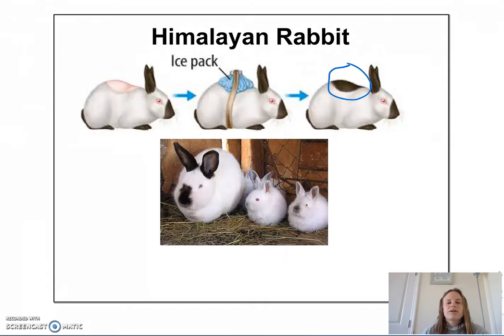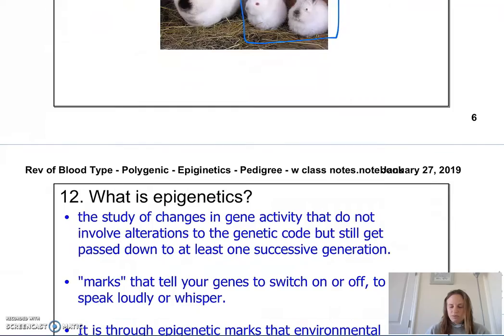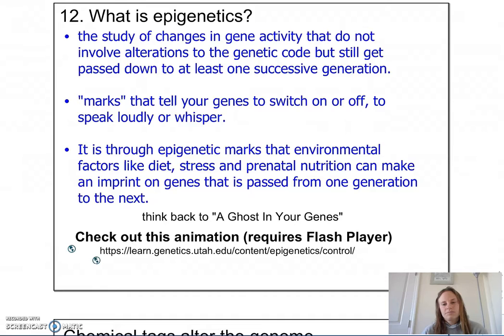However, when scientists shaved that area again without applying the ice pack, the fur grew back white. Also, the offspring of the Himalayan rabbits did not have dark extremities. Scientists wondered what was going on — there must be some gene being turned on or off based on something unknown. This led to the Human Genome Project, where scientists attempted to map all of humans' genes — our entire genome — which was finally completed in 2003.